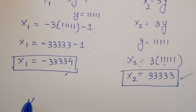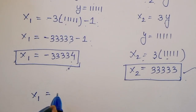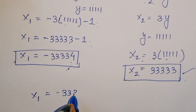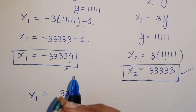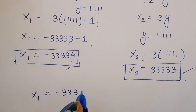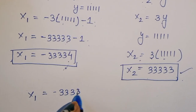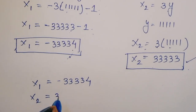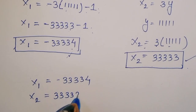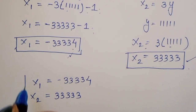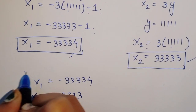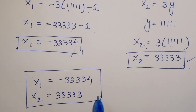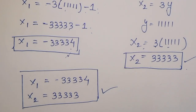So we got two values here: x1 is equal to minus 33334 and x2 is equal to 33333. This is the solution. Thank you.